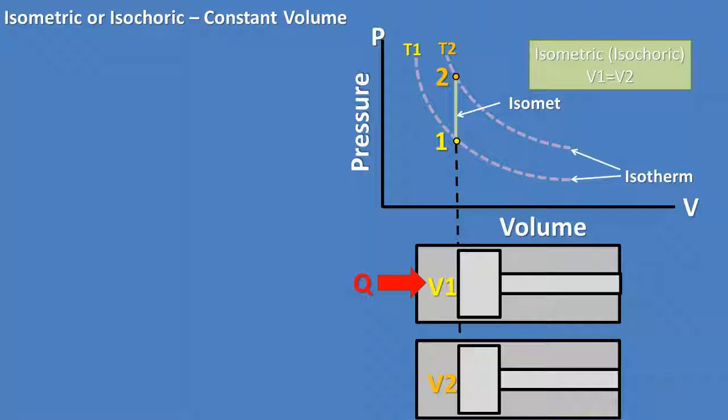I have a diagram of two pistons below the graph that represent the volume at two stages in the process. Notice that the volume in the piston chamber does not change. So there is no movement of the piston, so no work is done on the piston.